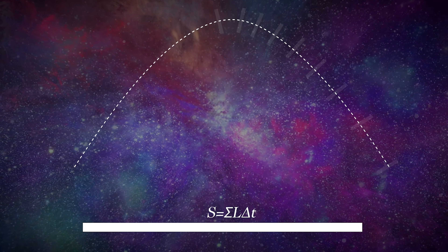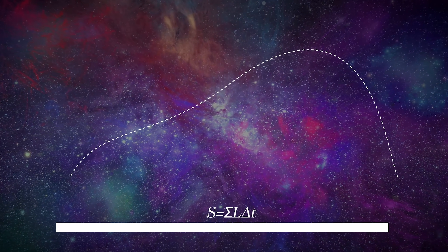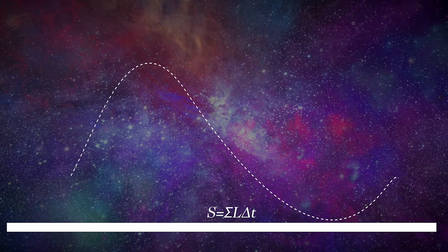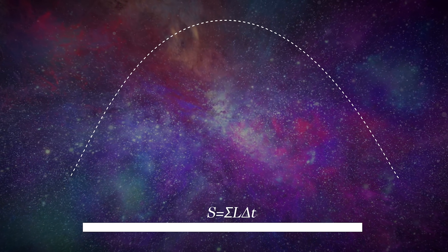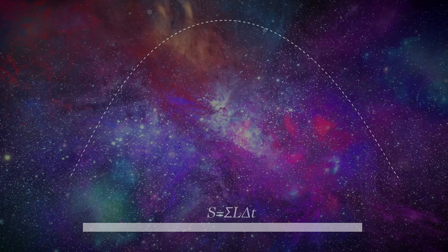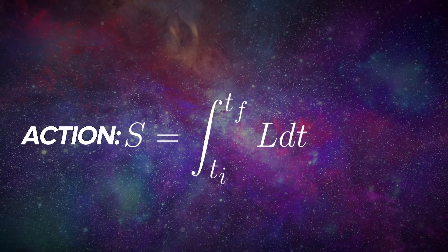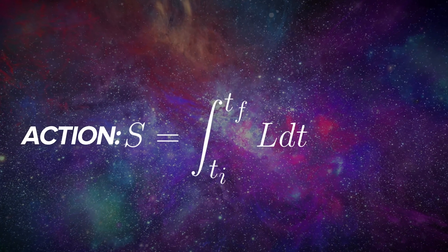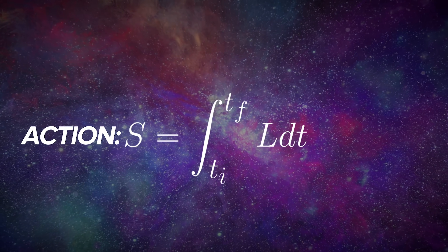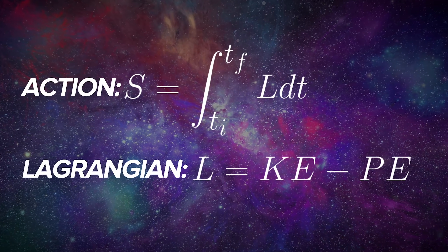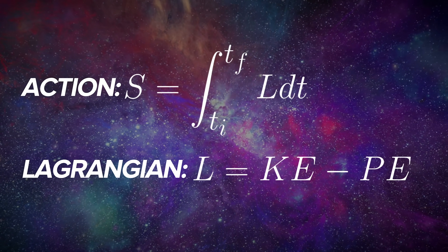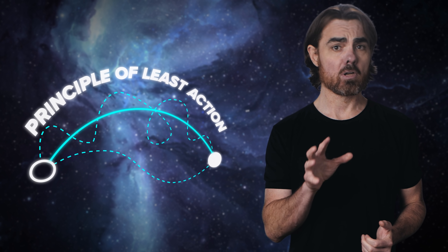Try the same for any other path that you can imagine — the result will come out higher for every path other than the path that the ball actually travels. Lagrange called this new quantity the action. Formally, it's the integral over time of the kinetic minus potential energies. And that difference in energies itself got the name Lagrangian, which turns out to be an enormously important and useful quantity. Lagrange proposed that everything in nature happens in such a way that action is always minimized. And so was discovered the principle of least action.